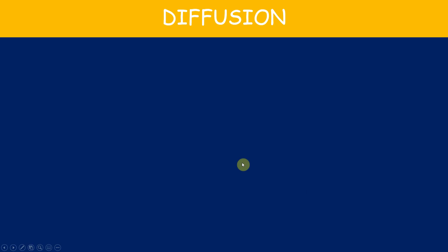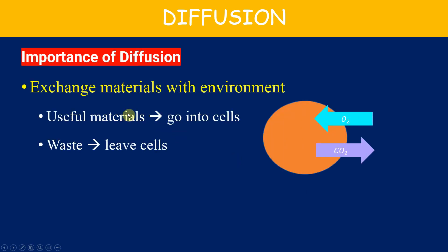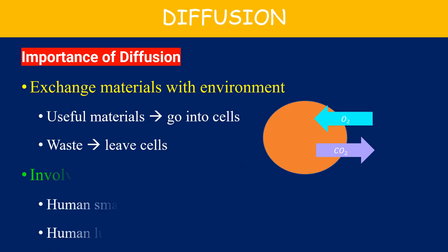The importance of diffusion: it allows exchange of materials between the environment and the cells, so useful substances such as oxygen can go into the cells, while wastes like carbon dioxide can leave the cells. Diffusion is also involved in many life processes, including the absorption of nutrients in the human small intestine, and gas exchange in the human lungs.